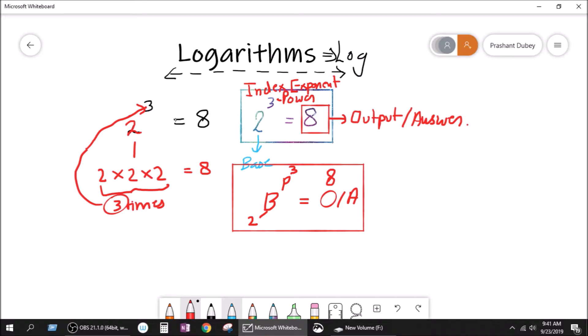Now, log is basically written in this form: log, and then we have the base. We have the output is equal to the power, which is just basically the same thing, but it has been written in a different form. It is just inverse of regular indices. So let's take this example which we took: 2 to the power 3 is equal to 8.